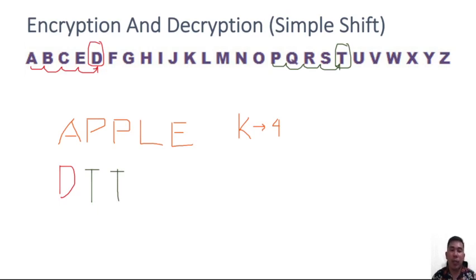And then let's proceed with L. You need to shift and move forward to the right by four, and then you will reach P. So therefore, L would have a ciphertext letter which is equivalent to P. And with E, you have letter H. Therefore, the ciphertext for the plaintext apple will be D, T, T, P, and H.